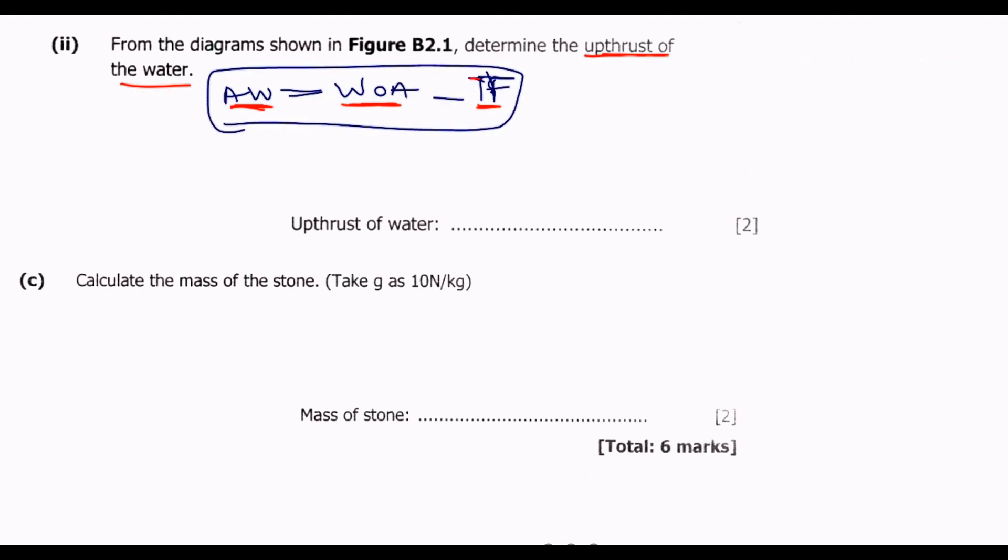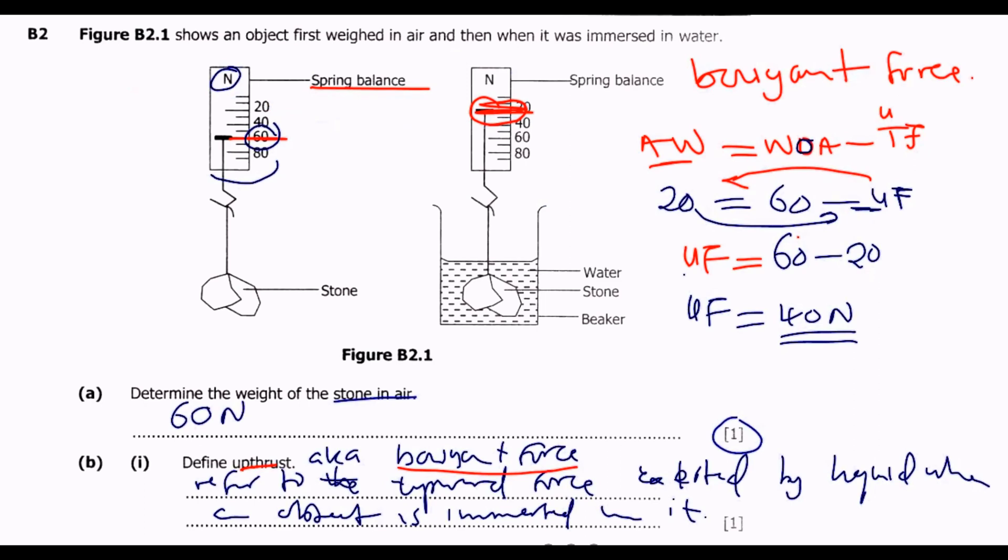This 40 Newtons is the upthrust force that we are looking for. Now question C: calculate the mass of the stone, taking gravity as 10 Newton per kilogram. You know that mass multiplied by gravity, we are going to get the weight. And this weight is the reading that we are getting of this stone in the air, which is 60 Newtons.